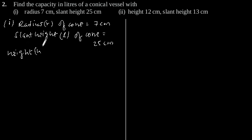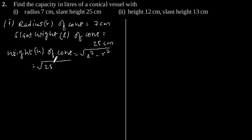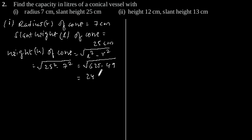Height h of cone will be square root of l squared minus r squared. Putting the values of l and h, we get square root of 25 squared minus 7 squared, which equals square root of 625 minus 49, giving height of the cone as 24 cm.